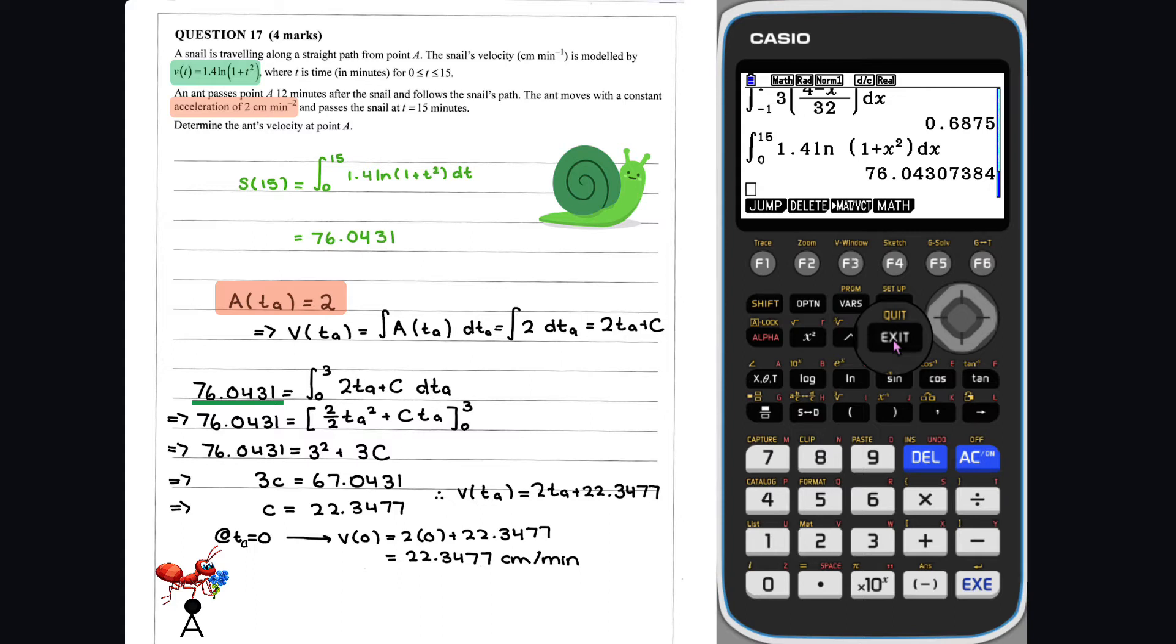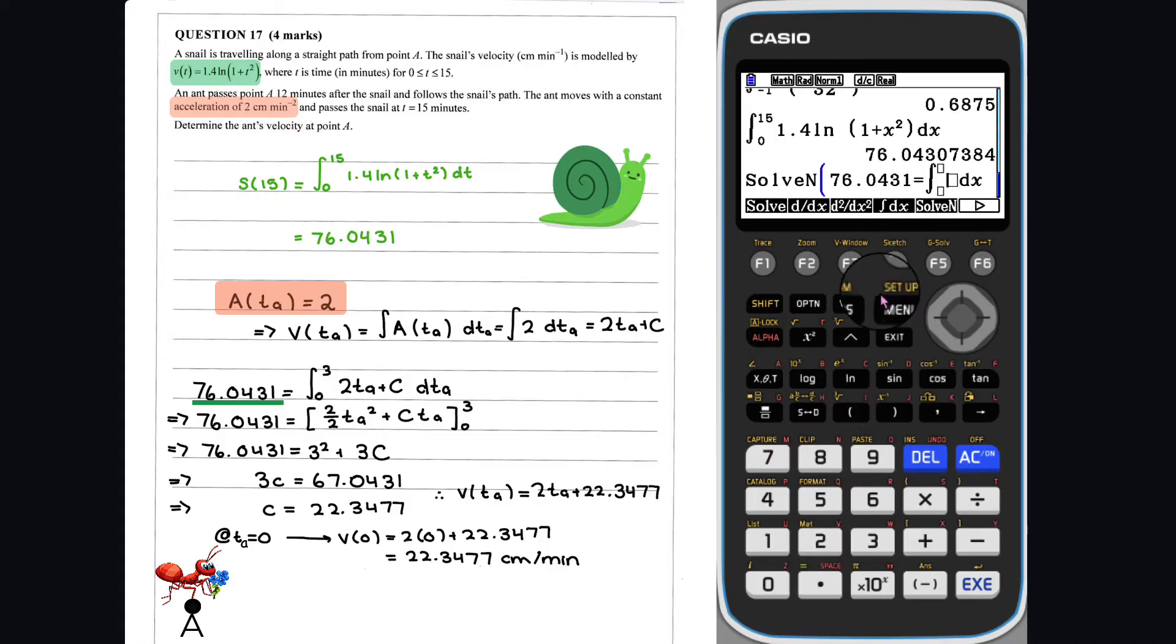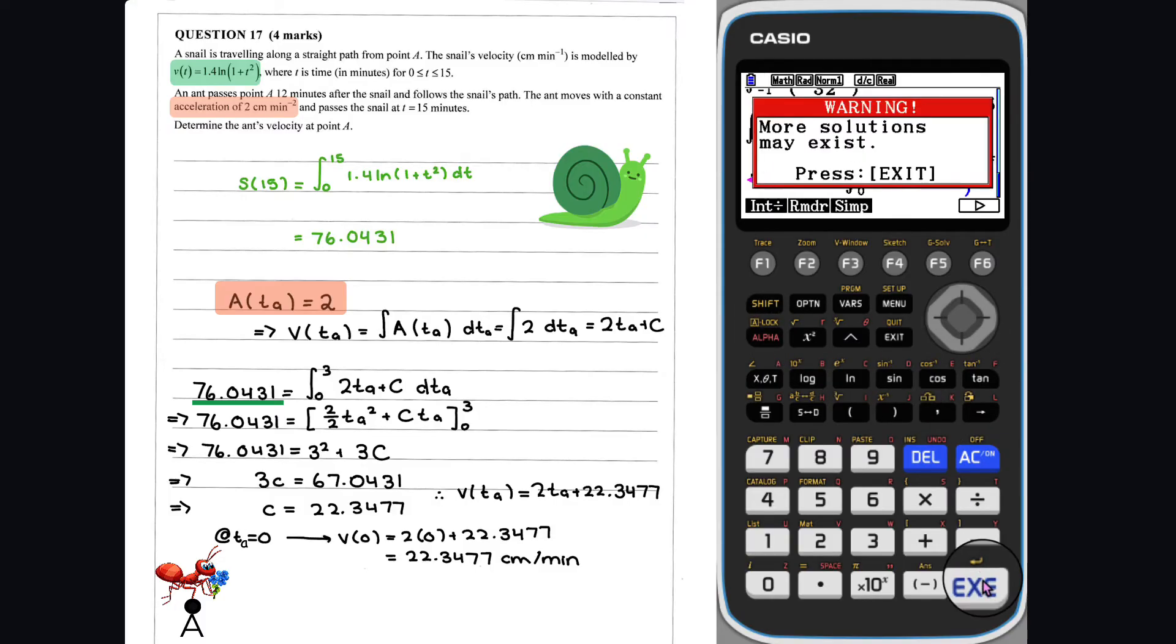Alternatively, the integration could be solved in the run mode as follows. Note here, this warning means that there may be more solutions to the equation we are trying to solve. However, in this case, there is only one value of C, so we don't need to worry about this warning.